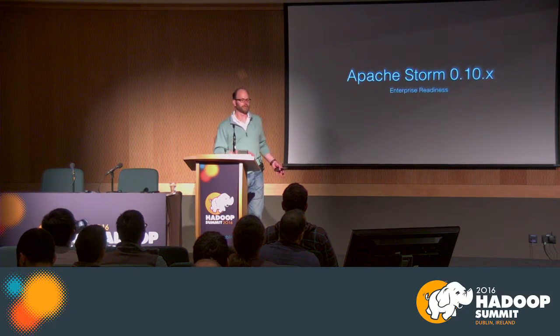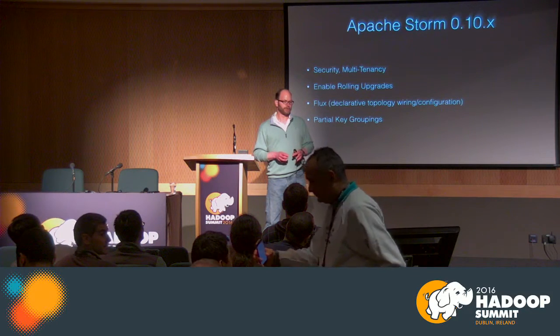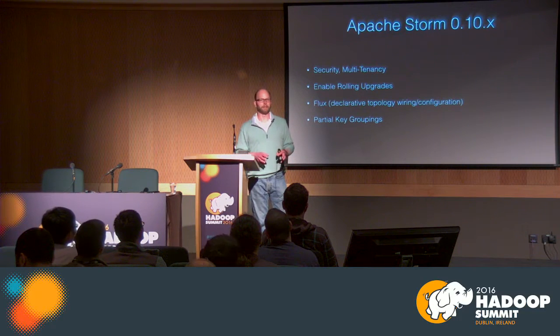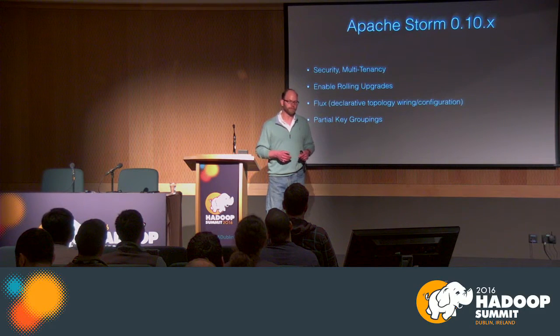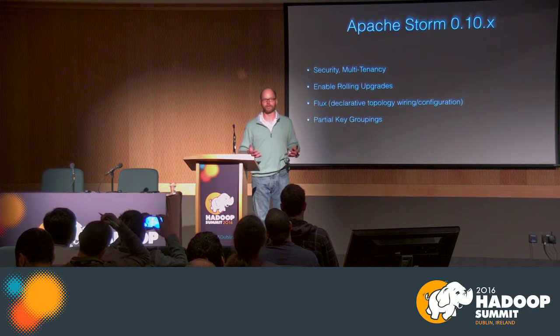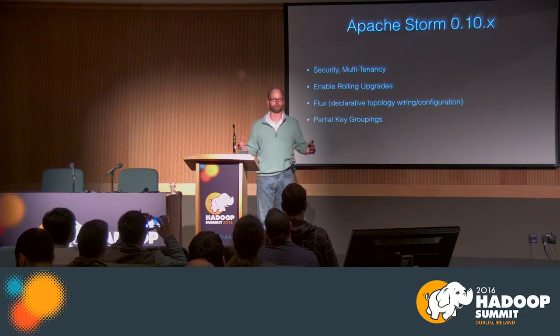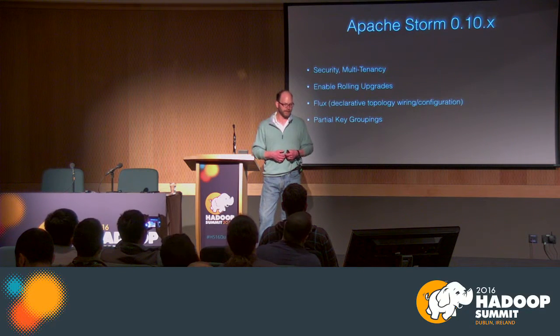The next major release was Storm 0.10, which was largely about enterprise readiness. In 0.10x, we introduced security and multi-tenancy — what a lot of enterprises really needed to adopt Apache Storm. Prior to that, like at Twitter, there was no security requirement for Storm because they controlled their in-house data center and did security through IP tables.